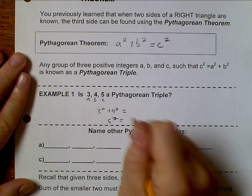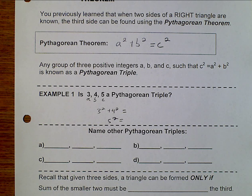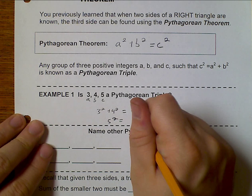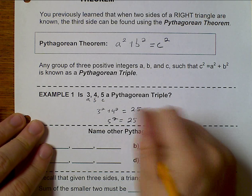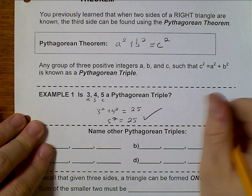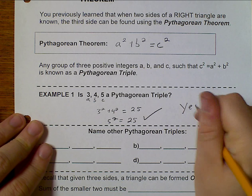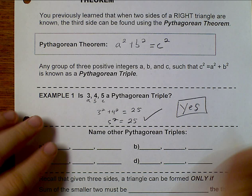Well, 3 squared plus 4 squared is 25, and 5 squared is also 25. Those match, and so yes, it is in fact a Pythagorean Triple.